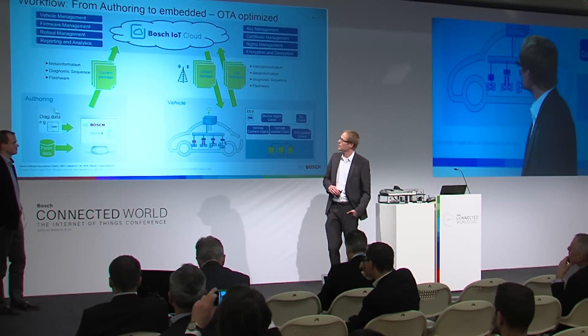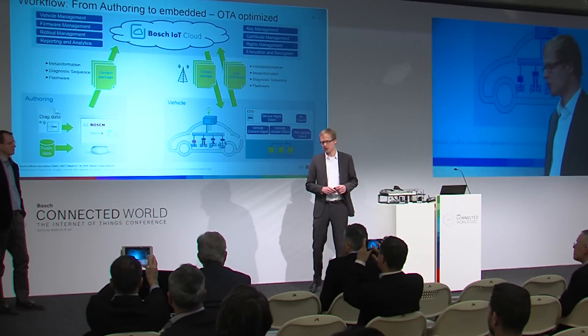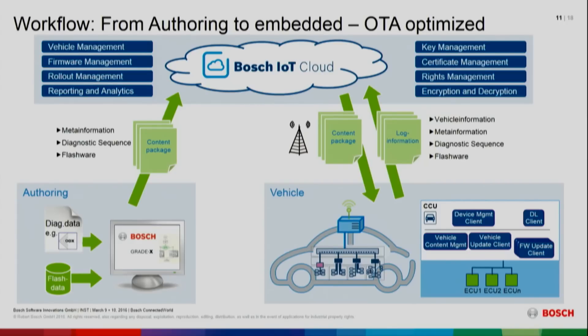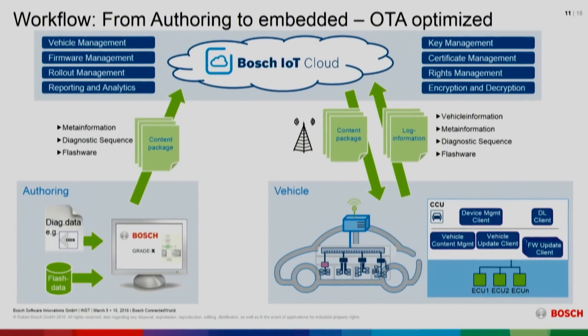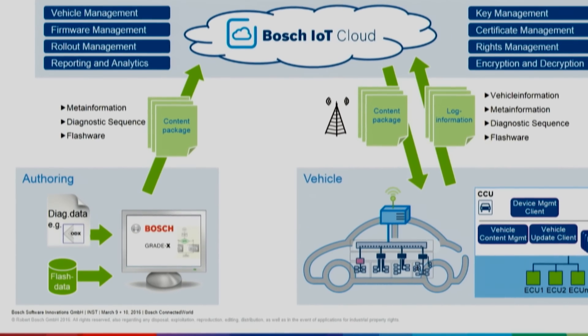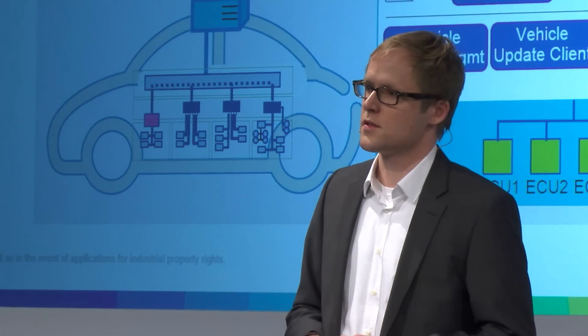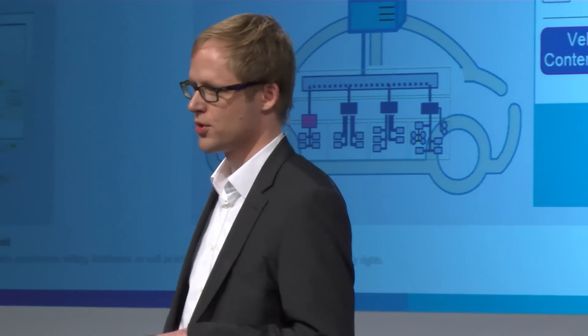What is the update workflow for an over-the-air update? It starts with an initial authoring step, where the update package is configured. The engineer puts together the content package with all the metadata and the diagnostic sequence. A diagnostic sequence could define, for example, what state the vehicle must be in when the update runs — whether the battery has to be at a certain level, whether the vehicle has to be at standstill, and whether driver interaction is involved or it is a silent update.